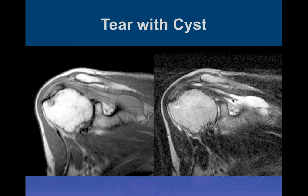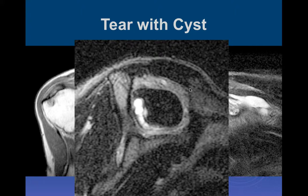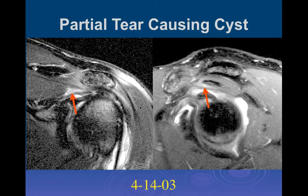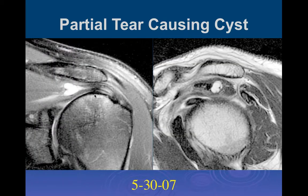Here's an interstitial tear again where we can see a proximal cyst develop within the muscle itself, a lot of distal tendinosis. On the fluid-sensitive images it was hard to follow the tear all the way into the joint space. Here's the cyst adjacent to the supraspinatus muscle. And then here's another partial tear going into the joint space on the inferior aspect of the supraspinatus tendon, and a heart-shaped cyst in the end of the muscle. You can see it on the sagittal images.